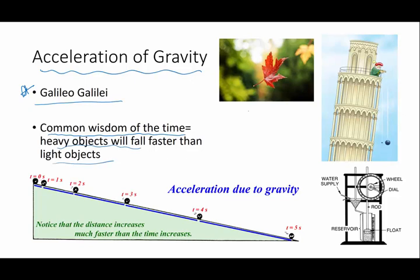And you and I have all seen light objects like a leaf, a piece of paper that fall very, very slowly to the ground. And if you drop something like a rock from a high distance, of course that rock is going to hit the ground long before the leaf.